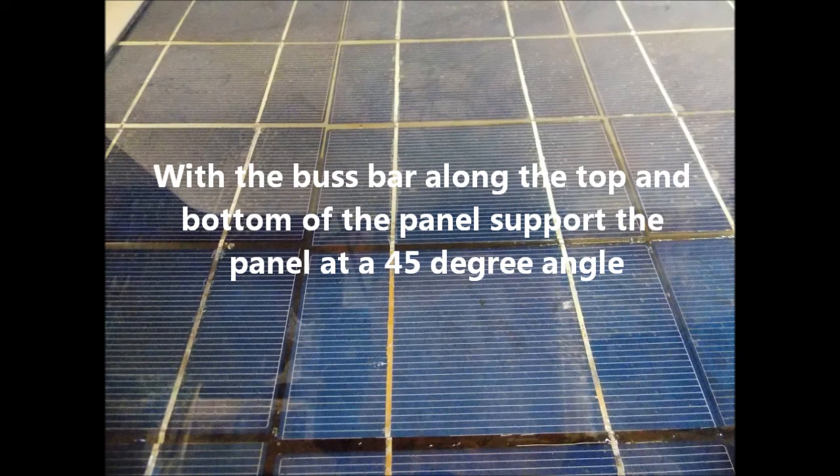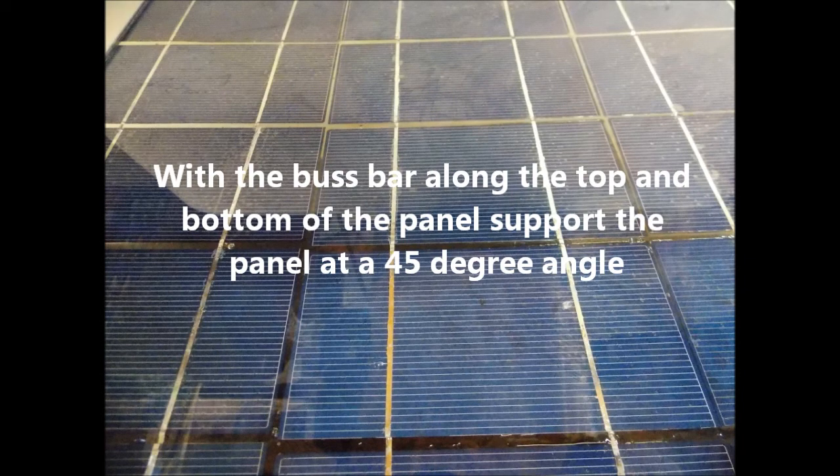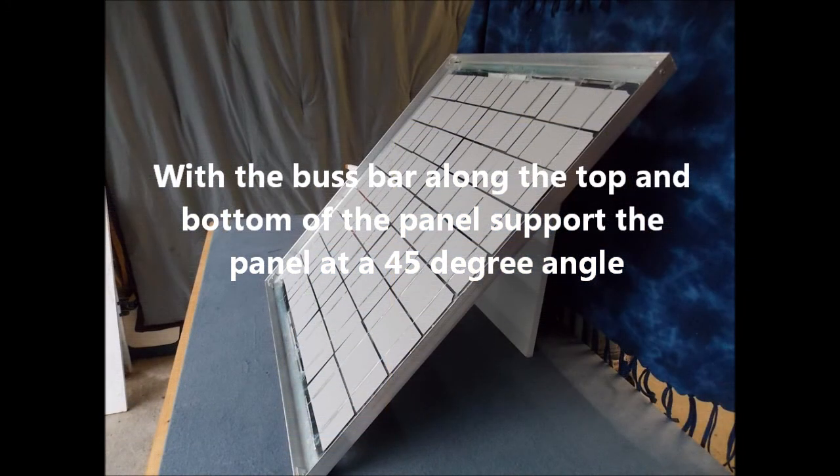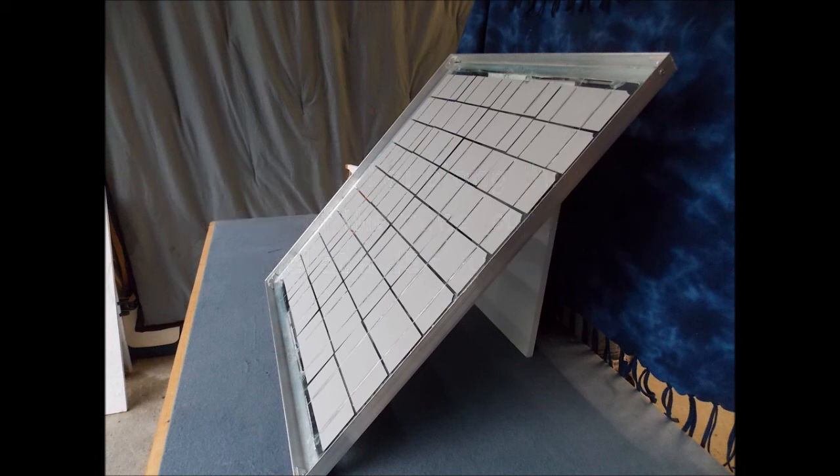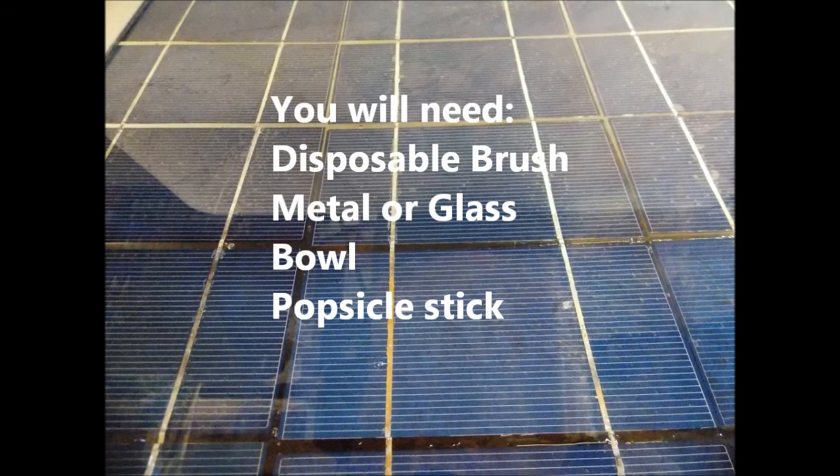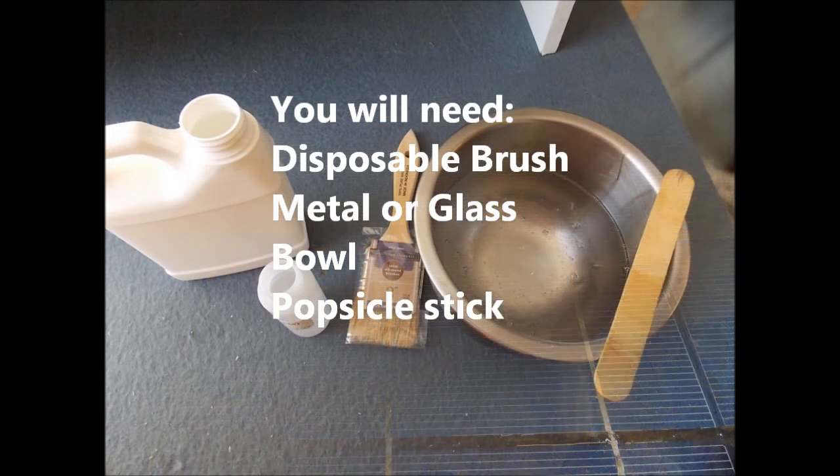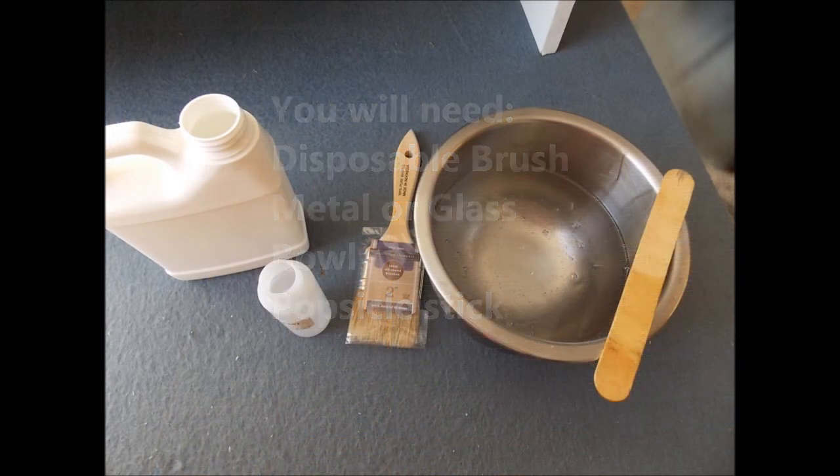With the bus bar along the top edge, slant your panel at a 45-degree angle. Then grab your Q-cell 216, a metal or glass bowl, a popsicle stick or metal stirring item, and a disposable paintbrush.